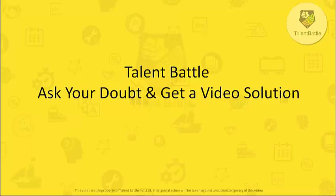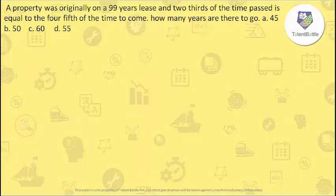So let's start with the question. This particular question was asked by Jasbir Singh from UIET College. The question is: a property was originally on a 99-year lease and two-thirds of the time past is equal to four-fifths of the time to come. How many years are there to go?